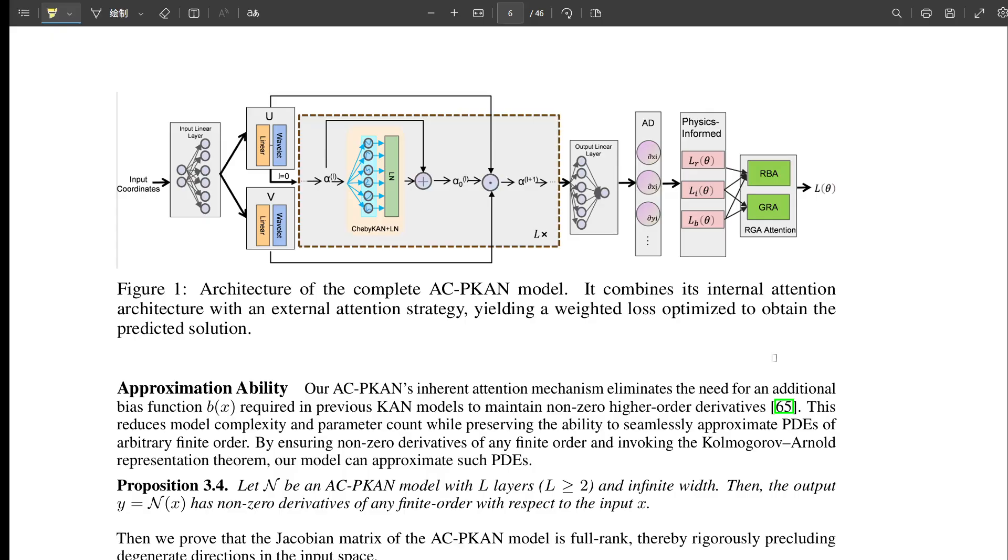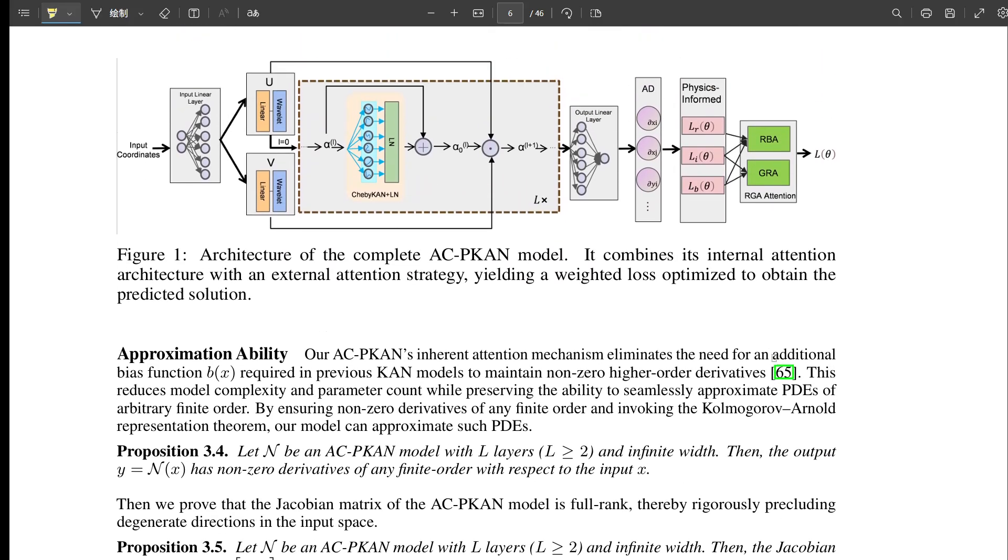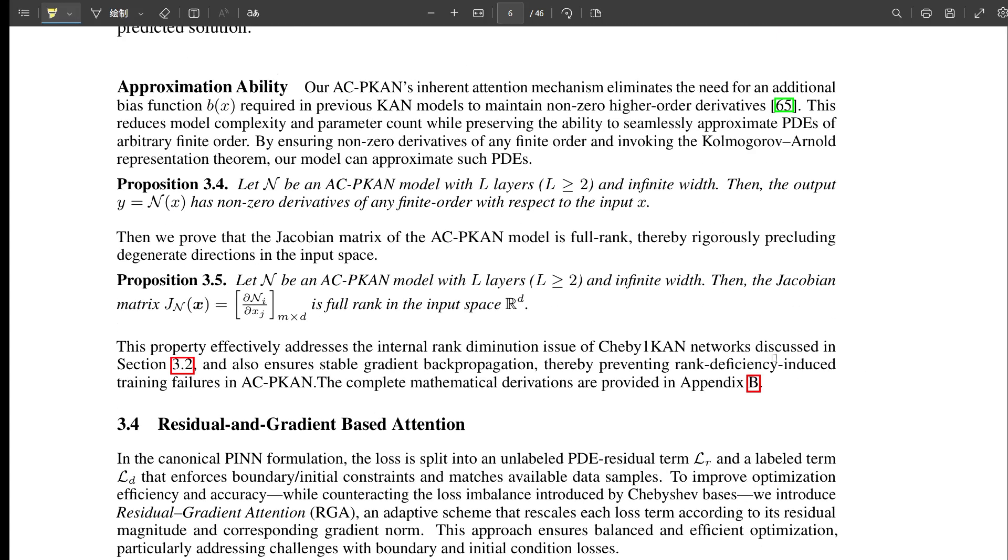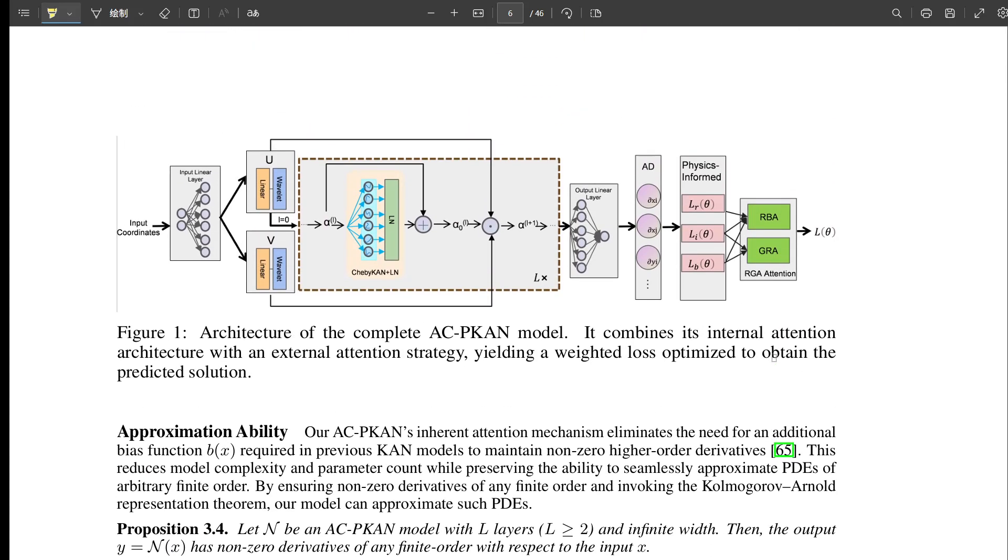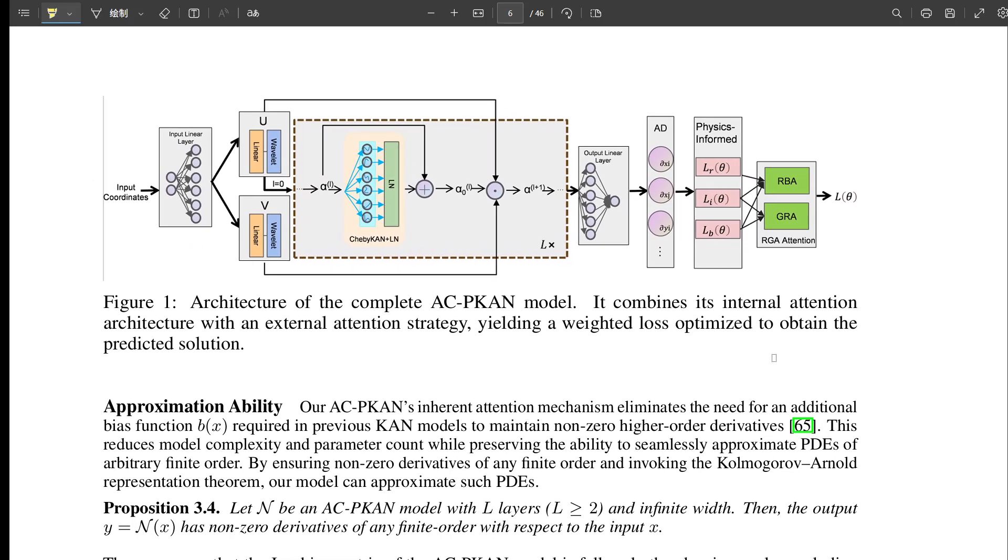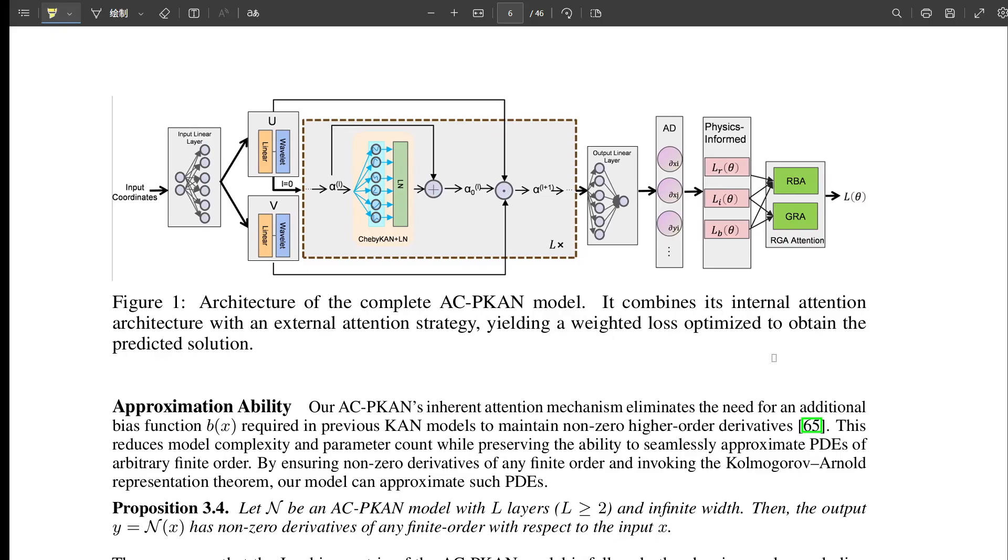How did ACPKAN do compared to others? The results look really strong. Table 1 in the paper summarizes it, and Figure 2 has visualizations. ACPKAN significantly outperformed pretty much all the baseline models they compared against - standard PINs, other CAN variants without the attention, and even methods like PINsformer. ACPKAN consistently got the lowest or second lowest test errors. So it generalizes better, finds more accurate solutions.